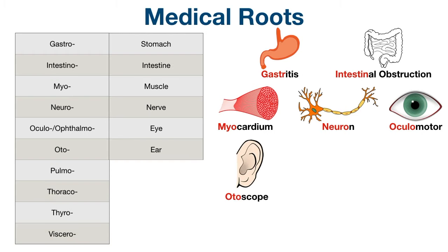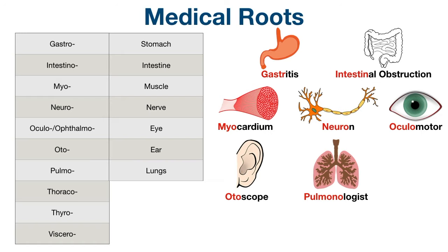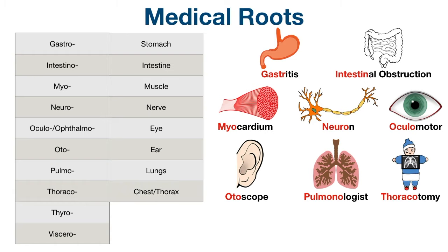Oto means ear. You can think of an otoscope, which is the instrument used to examine the ear. The next root is pulmo, which refers to the lungs. Just think of a pulmonologist, who is a practitioner specializing in the diagnosis and treatment of conditions related to the lungs. Next, we have thoraco, which means chest or thorax. An example medical term is thoracotomy, which is a surgical incision into the chest wall.